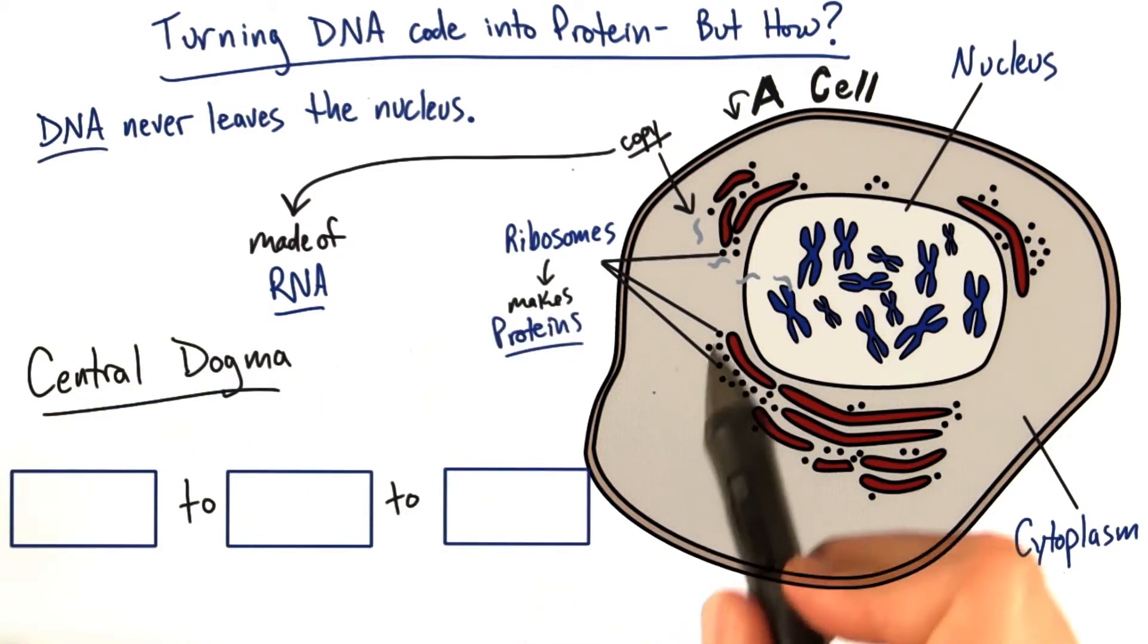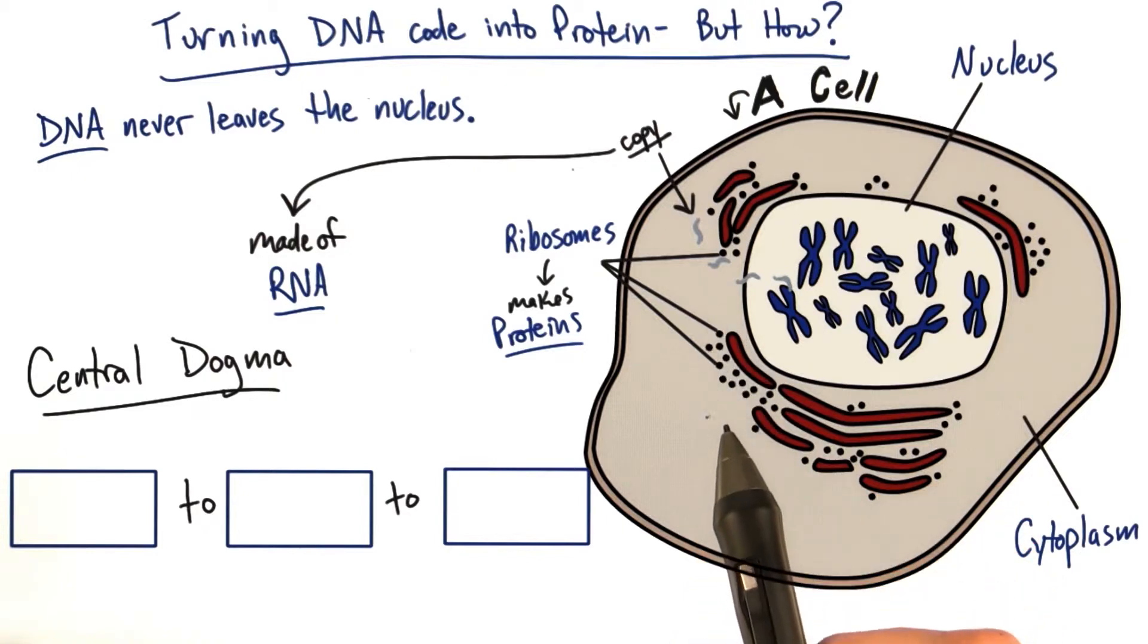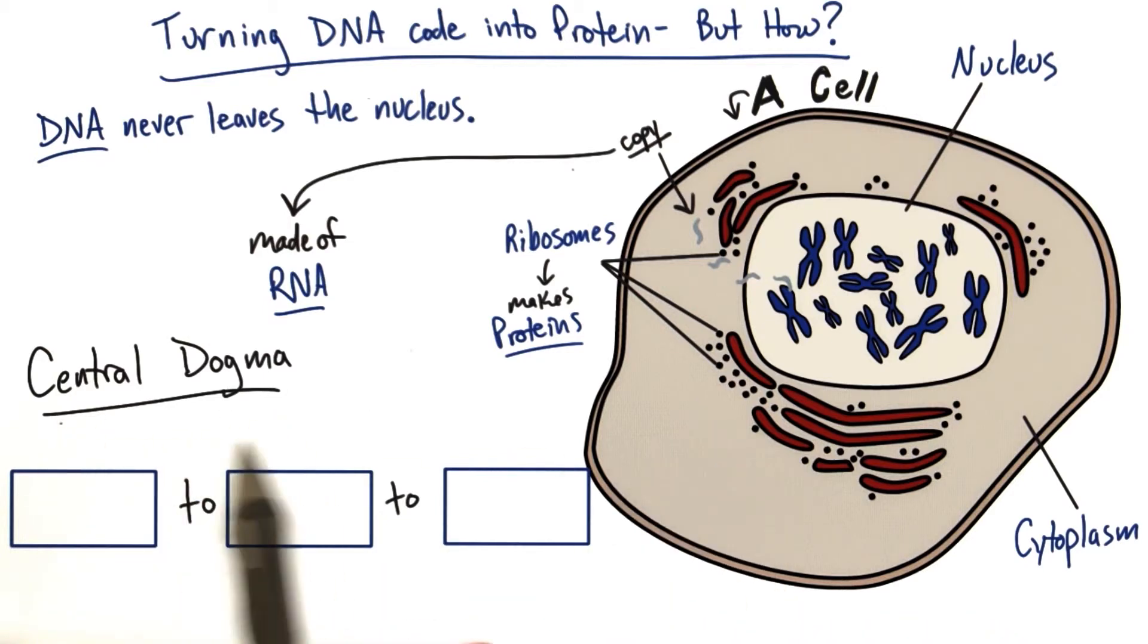This basic process of making copies of DNA, bringing it to the cytoplasm to make protein, is so important to almost all life forms on our planet that we call it the central dogma. And the central dogma takes on a very specific form, these three words organized in a certain order.